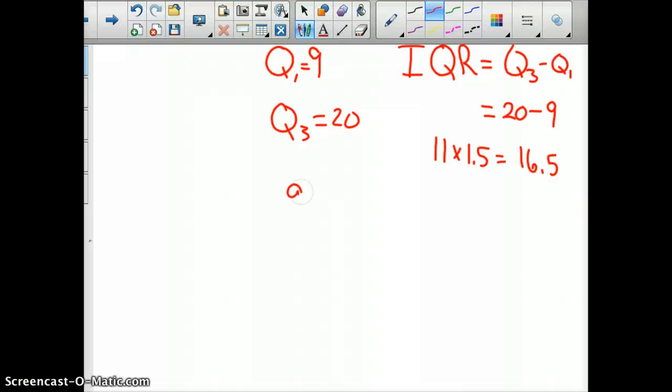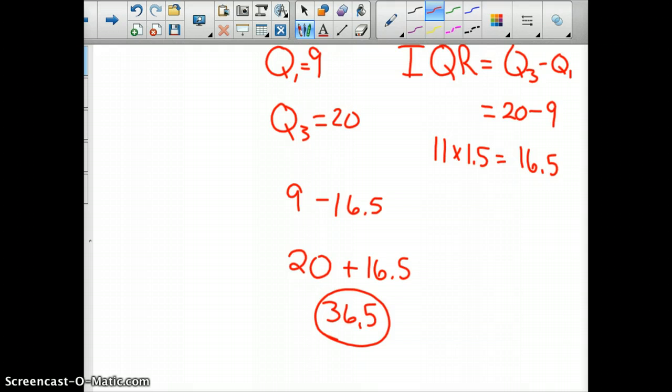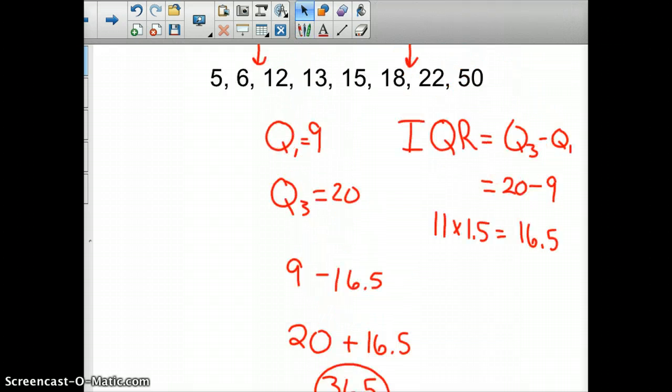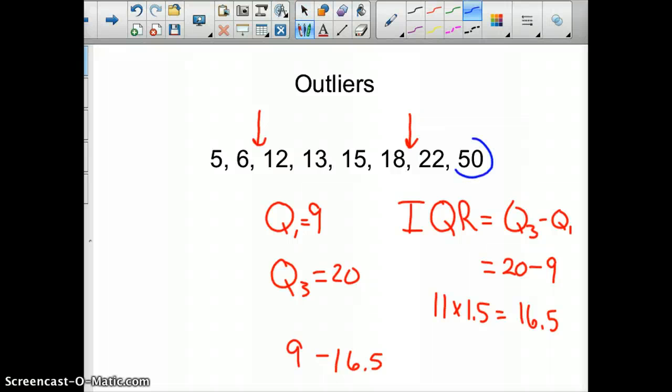If you take 9 minus 16.5, you end up with a negative number, which isn't even possible in our values, so we have no outliers that are low. But if you take 20 plus 16.5, now we've got 36.5. Look for any values above that. And believe it or not, we have one: 50. So 50 is an outlier in this data. You can kind of see that just by looking at the data, but you need to have a mathematical process for determining this.